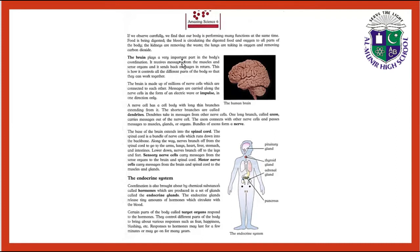Brain plays a very important part in the body's coordination. It receives messages from the muscles and sense organs and sends back messages in return. This is how it controls all parts of the body so that they can work together.